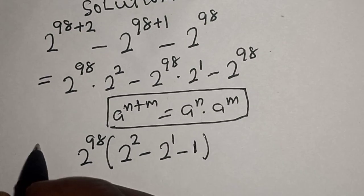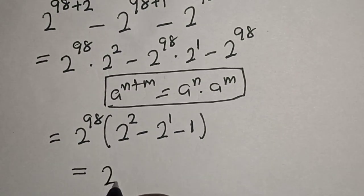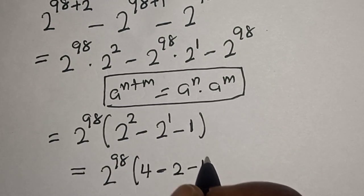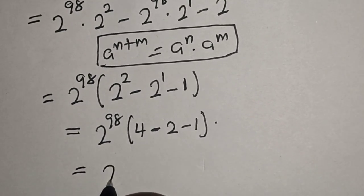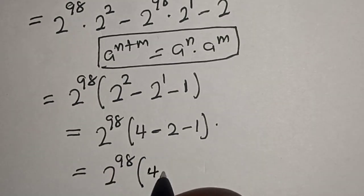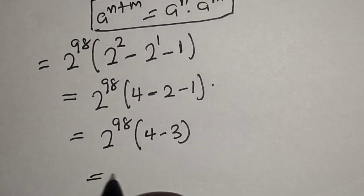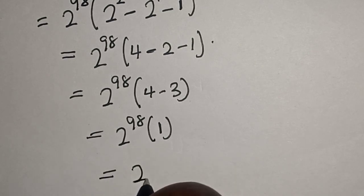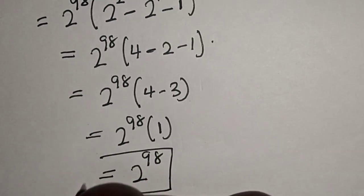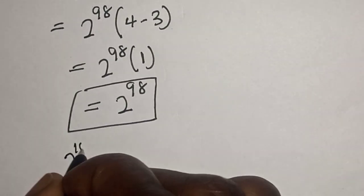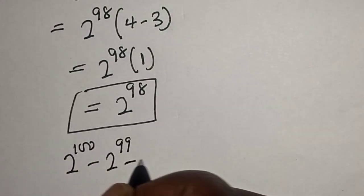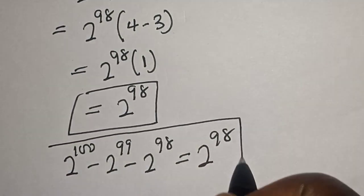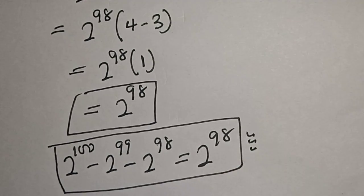This is equal to 2 raised to power 98 times the bracket: 2 squared, that is 4, minus 2 raised to power 1, that is 2, minus 1. This gives 2 raised to power 98 times bracket 4 minus 3, which is 1. So 2 raised to power 98 times 1 equals 2 raised to power 98. Therefore, 2 raised to power 100 minus 2 raised to power 99 minus 2 raised to power 98 equals 2 raised to power 98. Like, share, comment and subscribe. Thank you, bye bye.